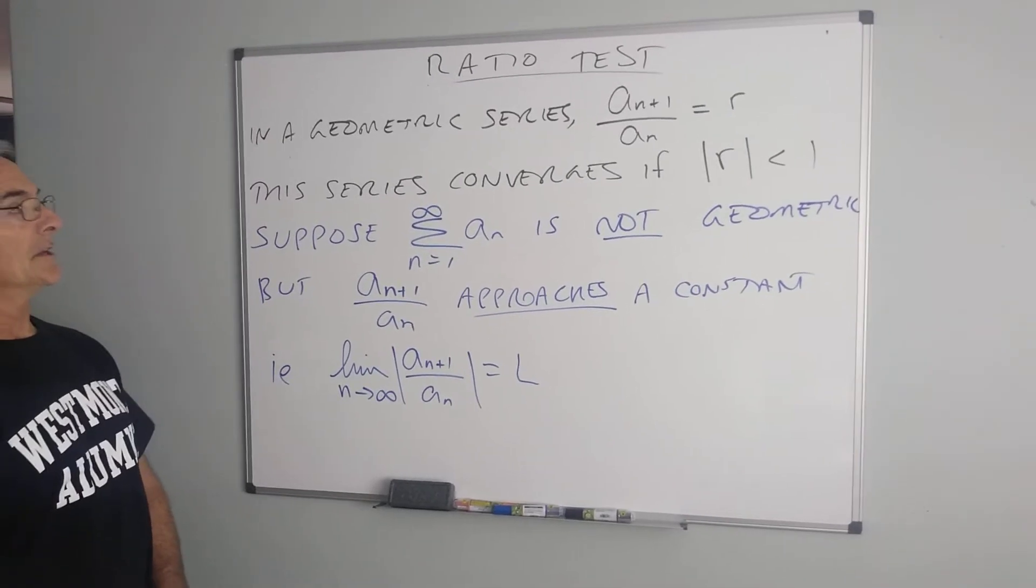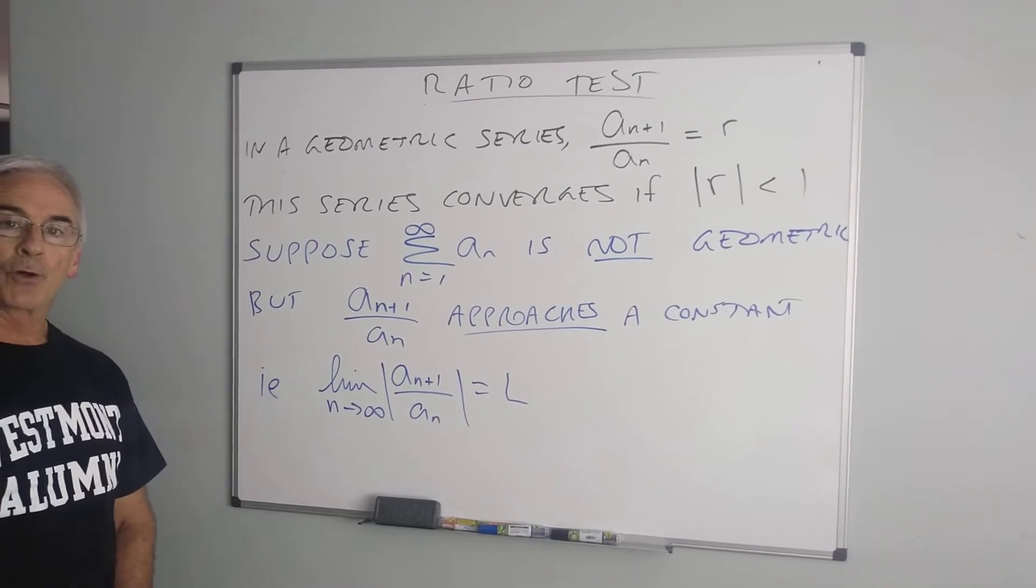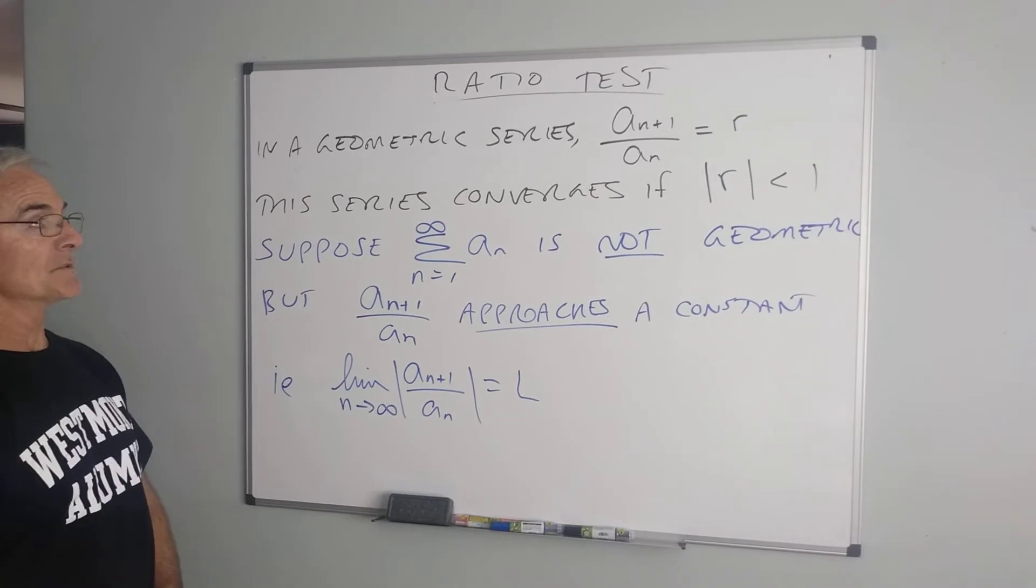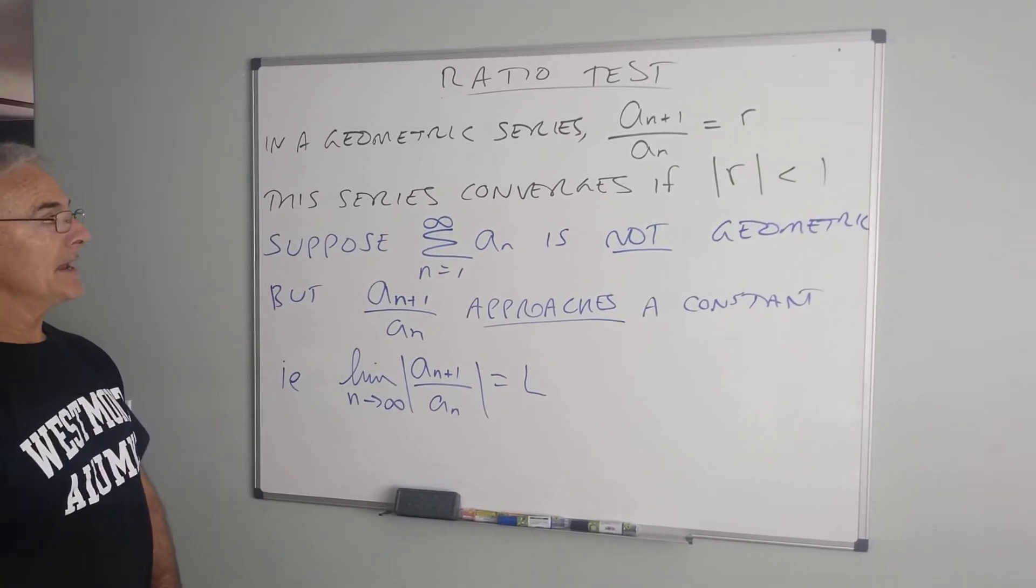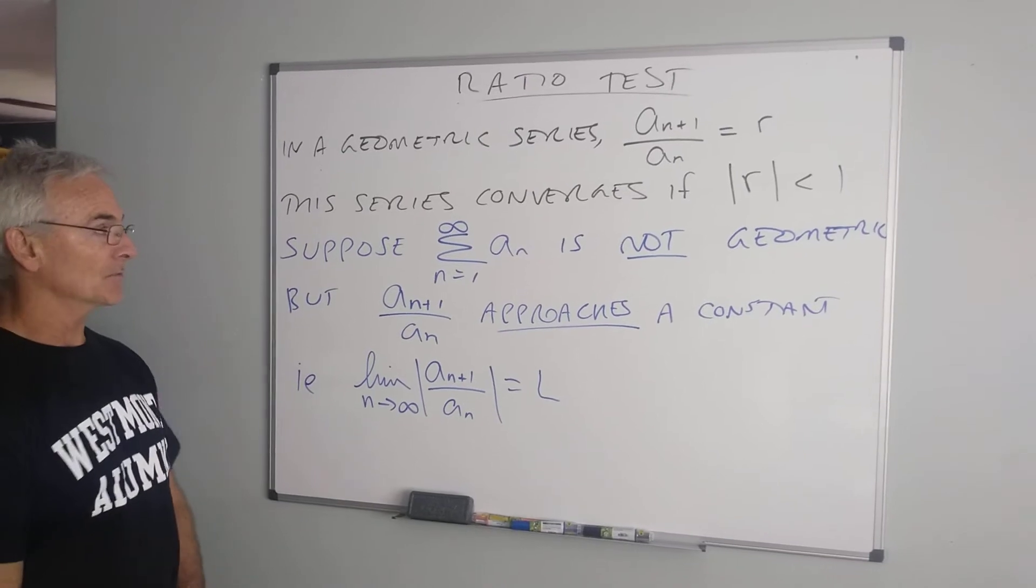We want to look at a ratio test. In a geometric series, we know the ratio of consecutive terms is constant, we call that R, and the series only converges if the absolute value of R is less than 1.